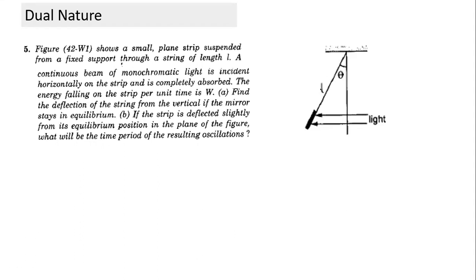The string is here, length L. A continuous beam of light is incident horizontally, so the light and its momentum are coming horizontally — it is equivalent to something striking with horizontal momentum. It strikes the surface and gets completely absorbed, so it is not reflected back. Whatever momentum it had after striking becomes zero, and that's why there is a change in momentum.